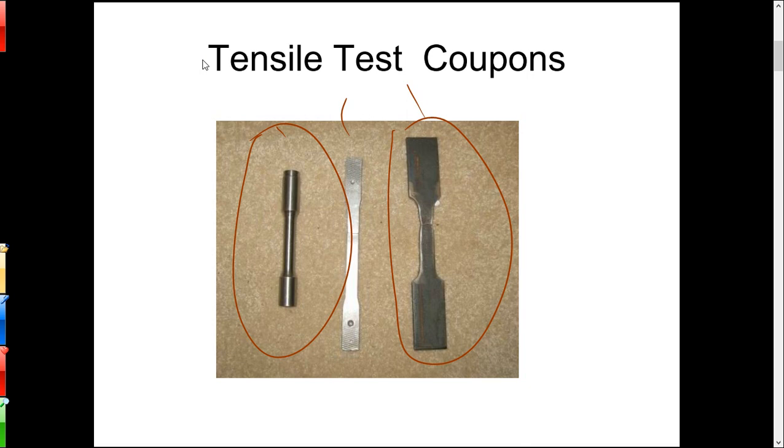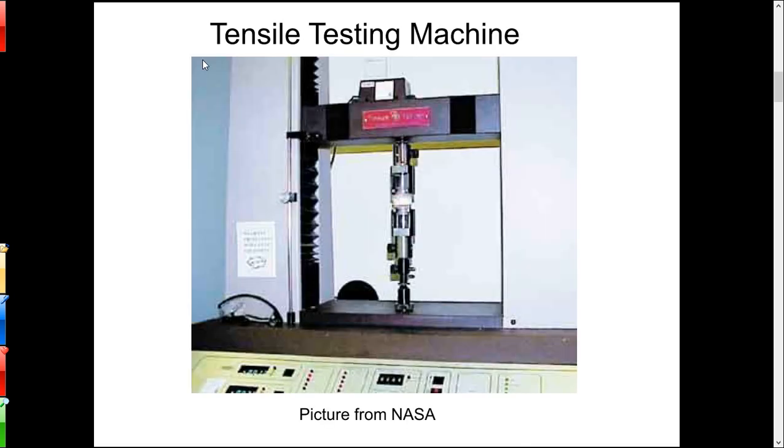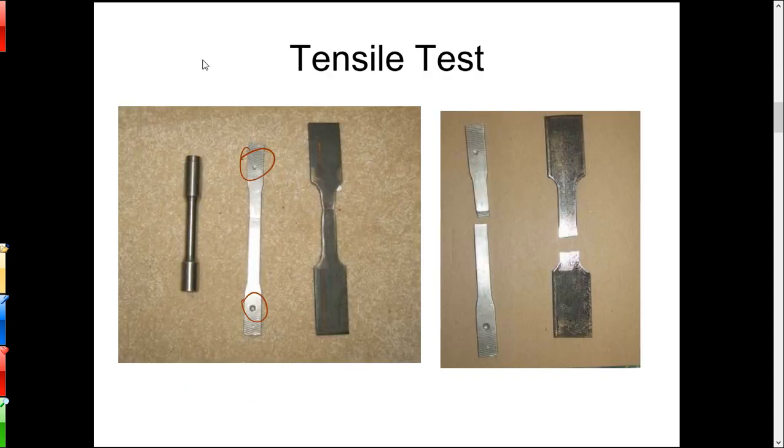Then what you do is you take these coupons and you put them in a tensile tester. A tensile tester is a very strong hydraulic machine with gripping jaws and what it does is it pulls the coupon apart. While you're pulling it apart, you also measure the elongation of the sample and you collect that data and put it on a graph.